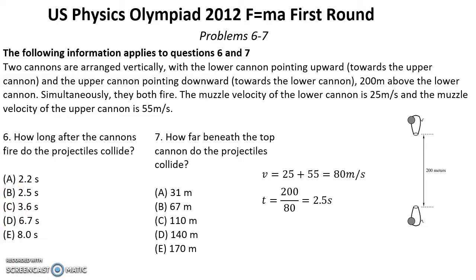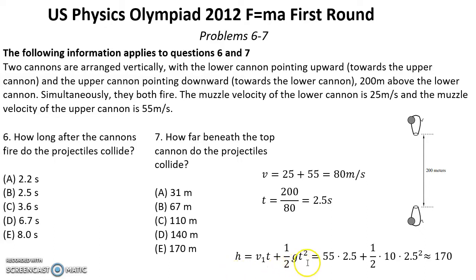Problem 7: How far beneath the top cannon do the projectiles collide? Using the height equation and putting in the numbers, the collision occurs approximately 170 meters below the upper cannon, which is answer E.